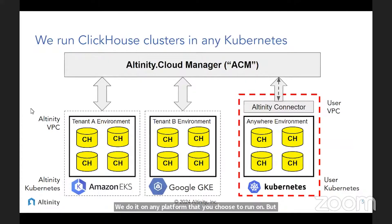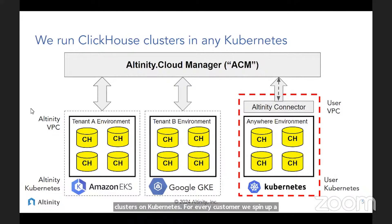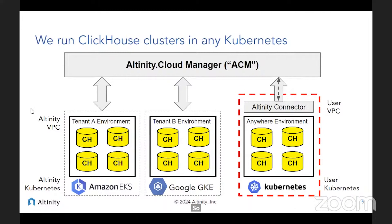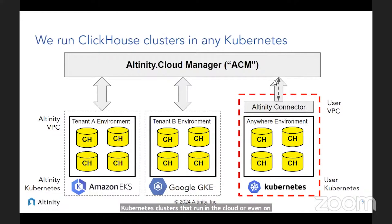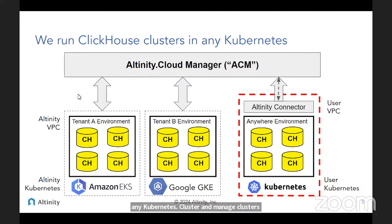For that, we have Altinity.Cloud, which runs clusters on Kubernetes. For every customer, we spin up a separate environment — one or more. You can run them in VPCs on Amazon, Google, and Azure. Or you can run in your own Kubernetes clusters in the cloud or even on-prem. We have secure connectivity that allows us to come into any Kubernetes cluster and manage clusters there, and those clusters can then live alongside your applications.